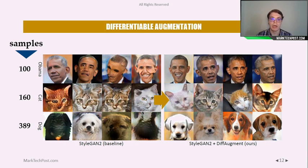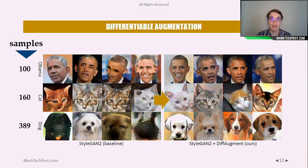The performances are astonishing. On the left side, we can see images generated by ordinary StyleGAN, and on the right side, images generated by StyleGAN plus differentiable augmentation. These results are even more impressive because these images were generated by training StyleGAN using a very small number of samples — for example, for the Obama pictures, the researchers used just 100 samples.